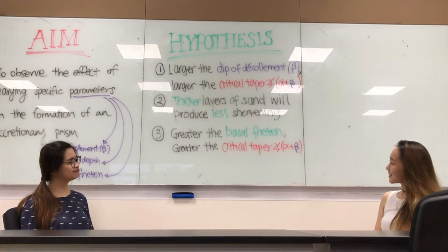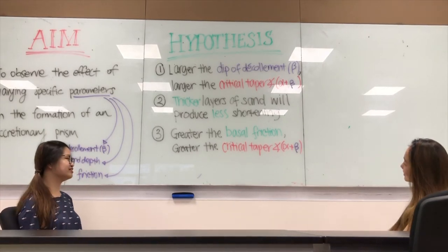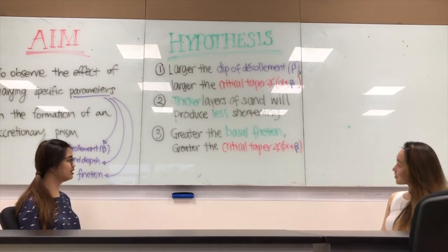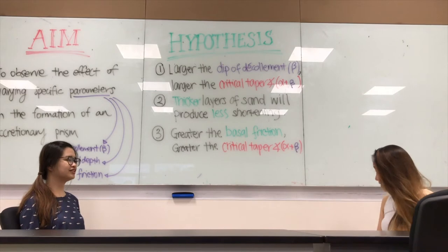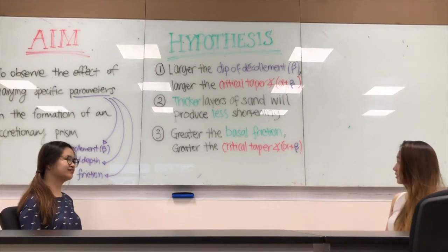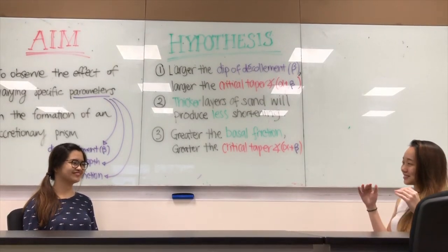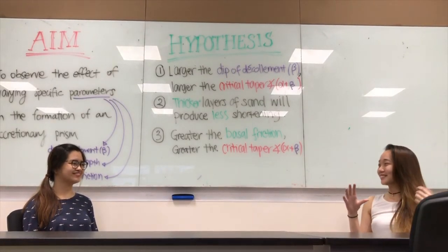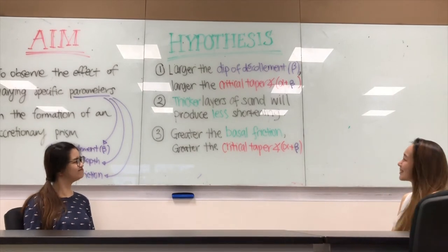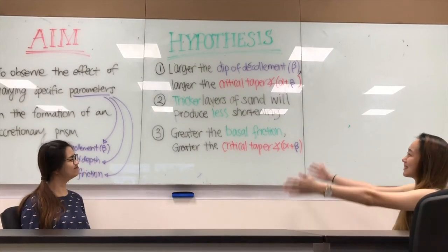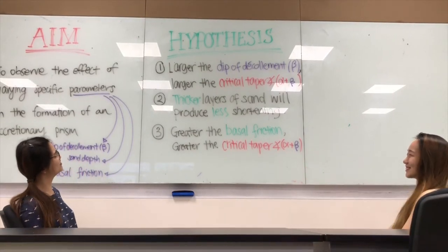Okay. Then our third hypothesis can be that the greater the basal friction, the greater the critical taper angle. Because you have more friction, so you would create a larger angle, right? Okay, that's good. It sounds good! Let's go!